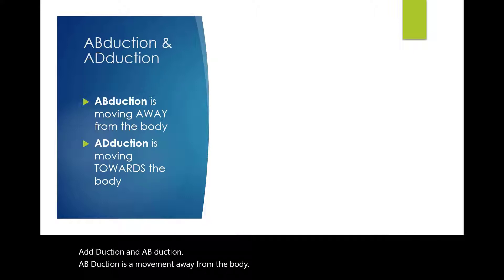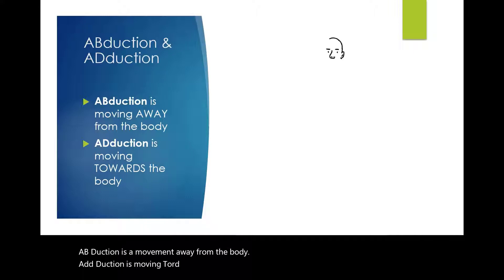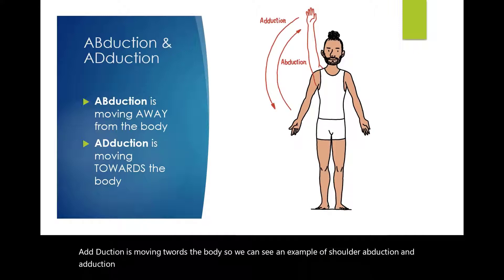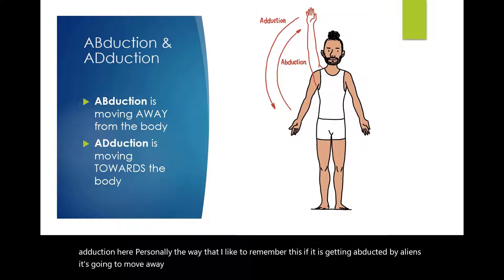Abduction is a movement away from the body; adduction is moving towards the body. We can see an example of shoulder abduction and adduction here. The way I like to remember this: if something is getting abducted by aliens, it moves away from the body; if you're going to add it to your body, it's adduction.